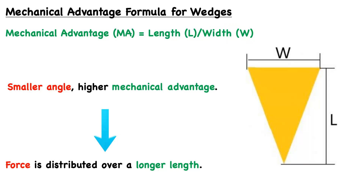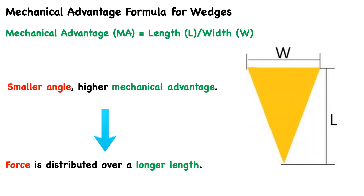The opposite is also true. If we were to decrease the length or instead increase the width, then we're going to decrease the mechanical advantage. Another way to think about this is: the smaller the angle, the higher the mechanical advantage.